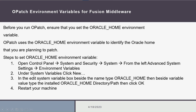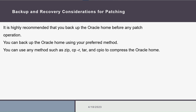The next step in the prerequisites is to set the Oracle home environment variable and back up the Oracle home directory. We will open the environment variables again and set the Oracle home path to the Oracle home environment variable, then restart our machine. After the restart, we will back up the Oracle home by copying it or archiving it.